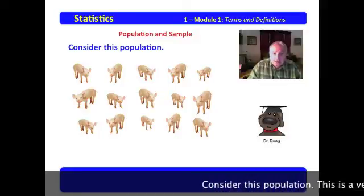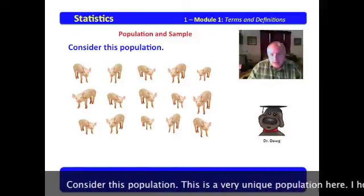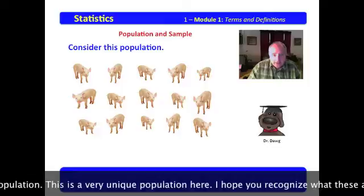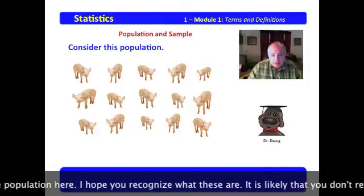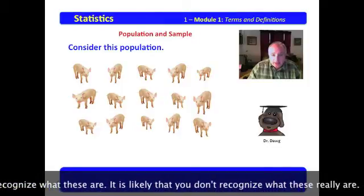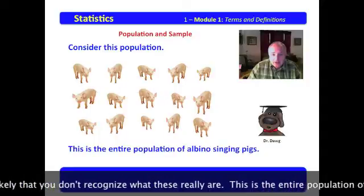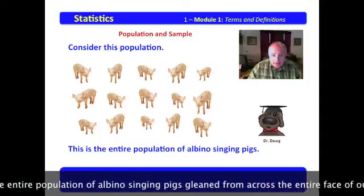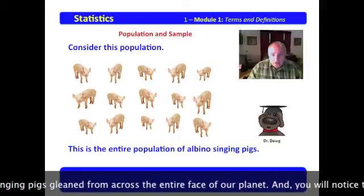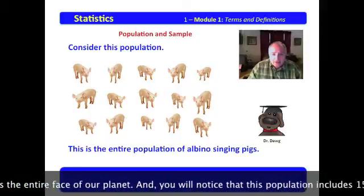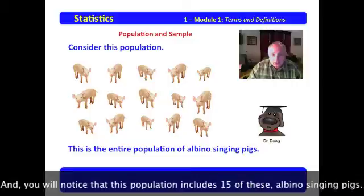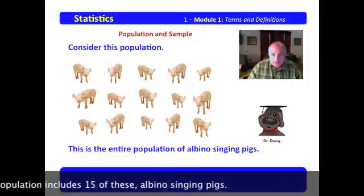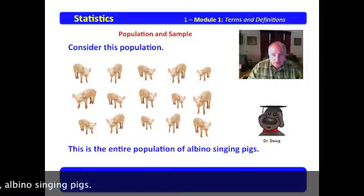Consider this population. This is a very unique population here. I hope you recognize what these are. It's likely that you don't recognize what these really are. This is the entire population of albino singing pigs gleamed from across the entire face of our planet. And you will notice that this population includes 15 of these albino singing pigs.